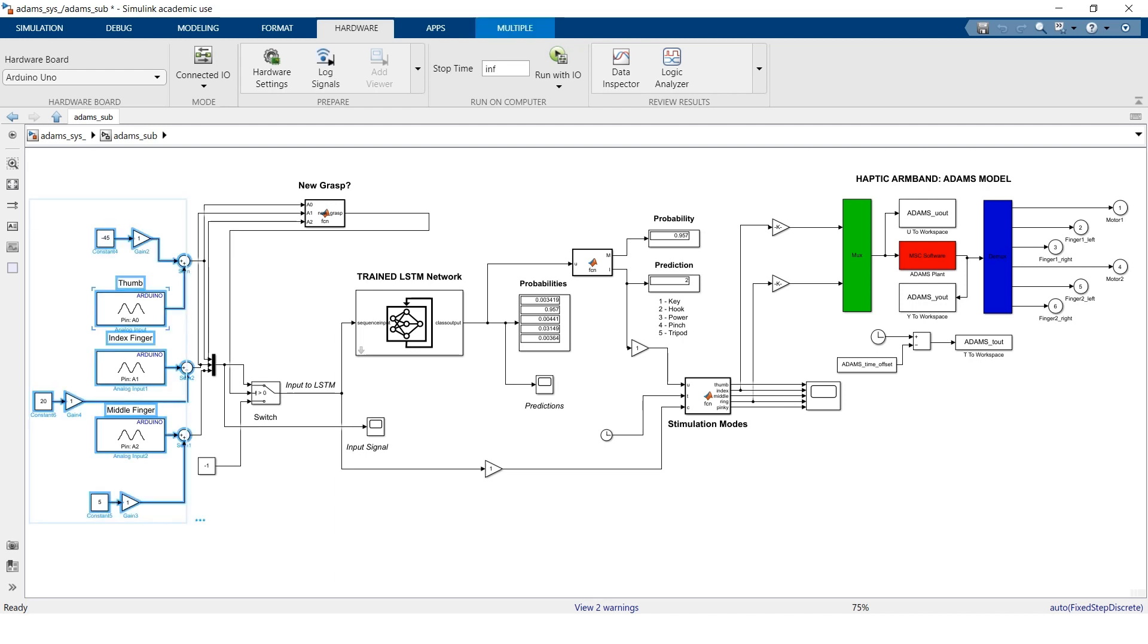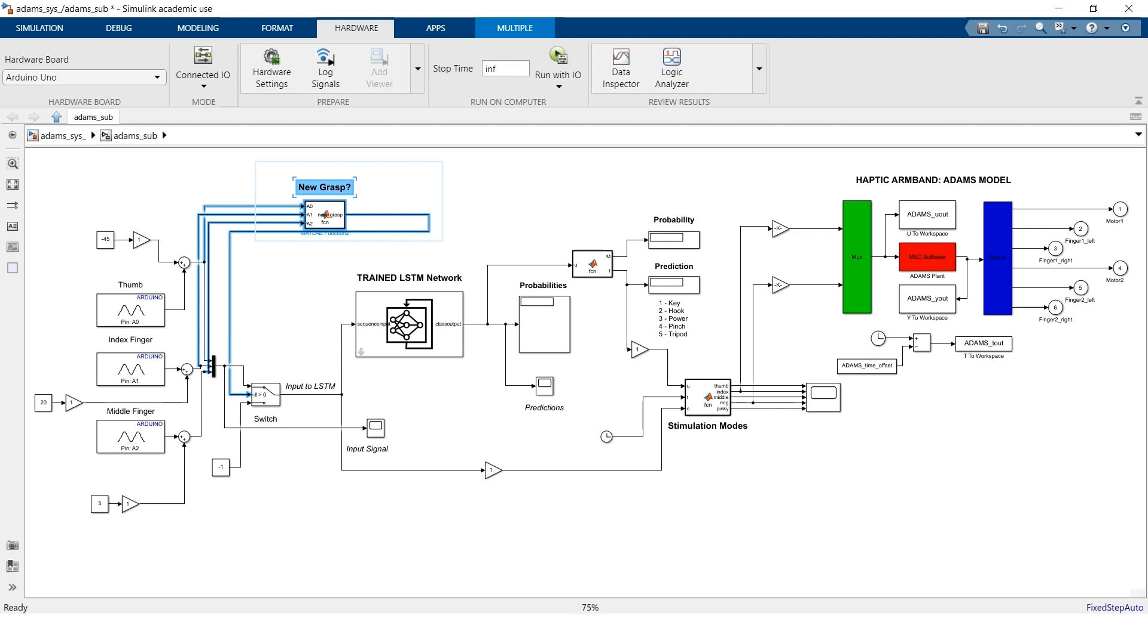We have an input block to collect the sensor readings. We have a MATLAB function which will determine if a new grasp is initiated. If the answer is yes then the sensor readings are sent to the LSTM network to produce a prediction. If the answer is no then we ignore the prediction and maintain the current output.